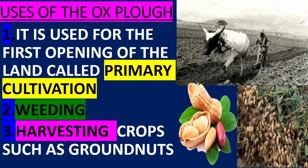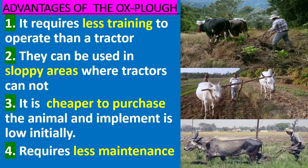Uses of the ox plow: plowing, weeding, and harvesting crops such as groundnuts. Advantages of the ox plow: one, it requires less training to operate than a tractor.